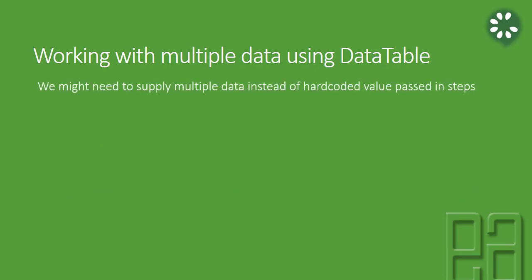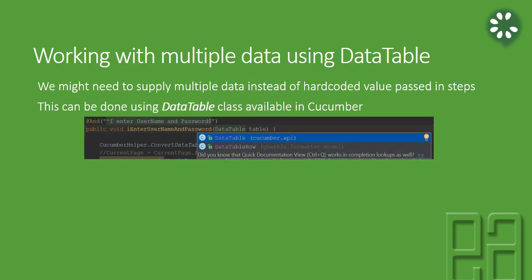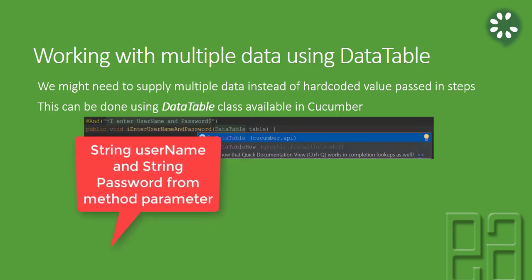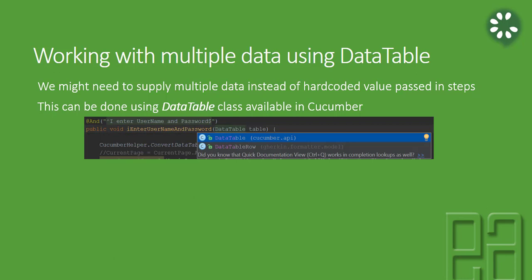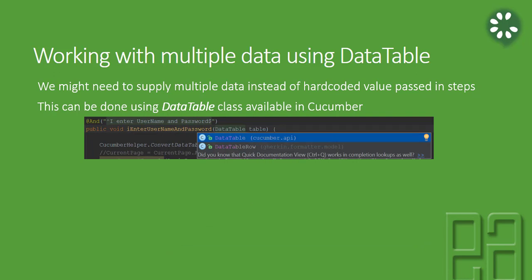We might need to supply multiple data instead of hardcoded values passed in the steps. In part 5 we discussed about passing values from a feature file using string parameters and arguments for a step definition, which is fine if you have a single data. But what if your step has multiple values — username, password, first name, last name, email, phone numbers, address, etc. — for a single step? Then passing them as arguments is going to be cumbersome. The best idea is to go with data tables.